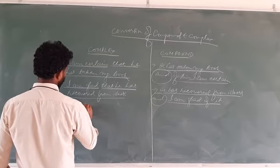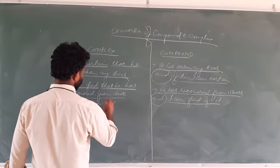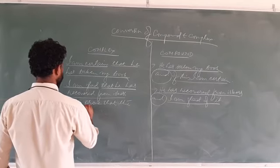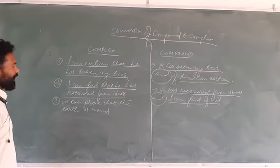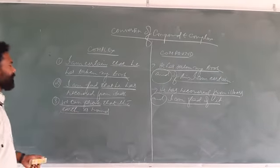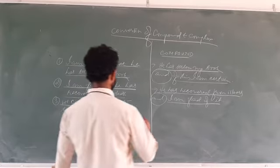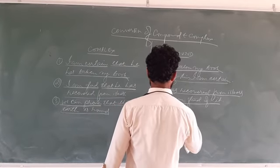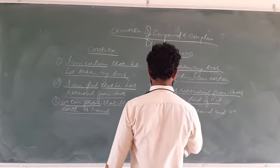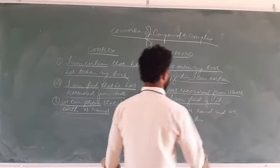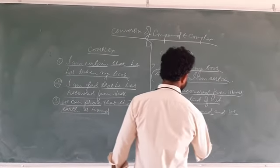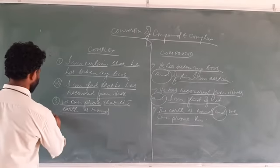Another example: 'We can prove that the earth is round.' Here 'we can prove' is the principal clause and 'that the earth is round' is the subordinate clause — it is a noun clause. We change this into a compound sentence: 'The earth is round and we can prove this.' The two independent clauses are connected by the coordinating conjunction 'and'.